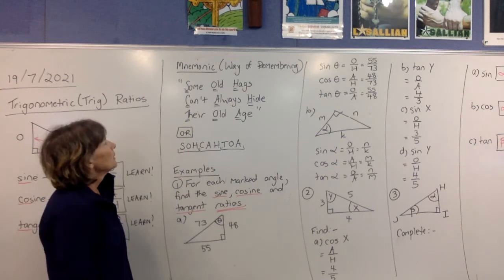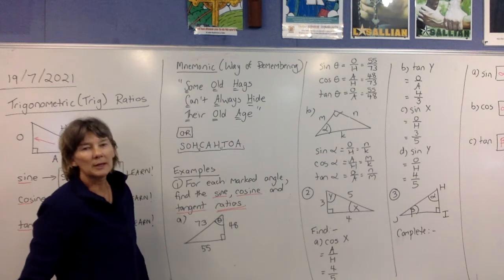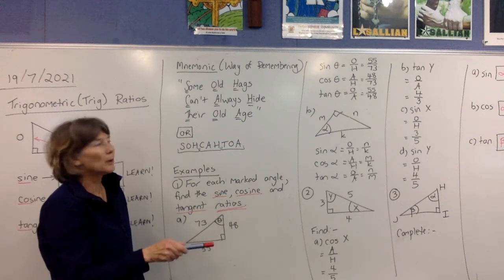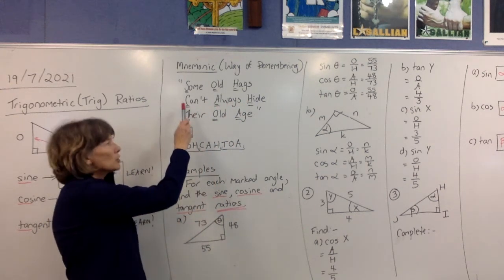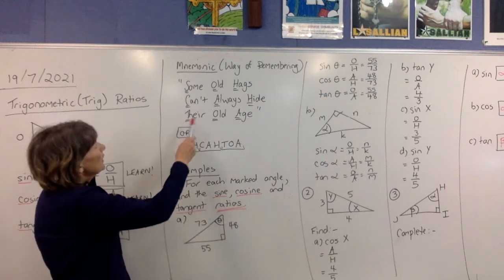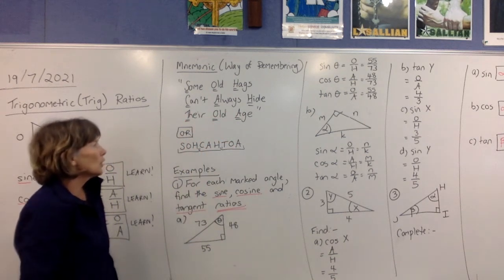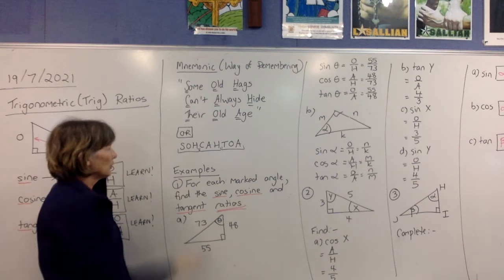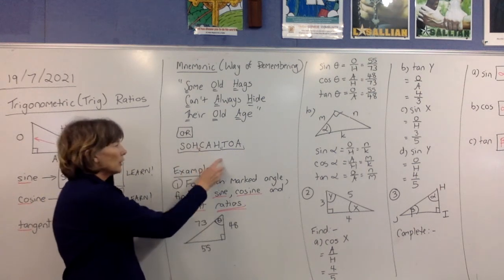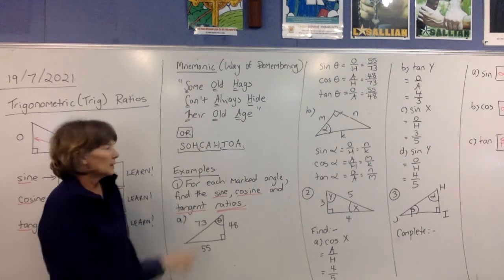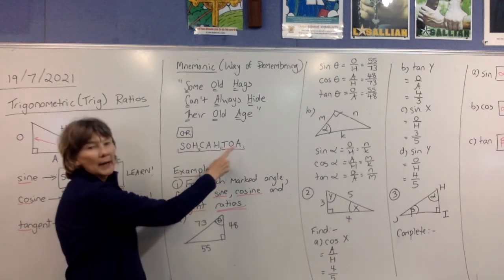If we look at the first letter of each word in the rhyme: S-O-H is sine equals opposite over hypotenuse. The next three, C-A-H, cos is adjacent over hypotenuse. And T-O-A, tan is opposite over adjacent. Some students like to just learn SOH-CAH-TOA, as long as you know the first three are grouped together, the next three grouped together, and the last three grouped together: sine is opposite over hypotenuse, cos is adjacent over hypotenuse, and tan is opposite over adjacent.